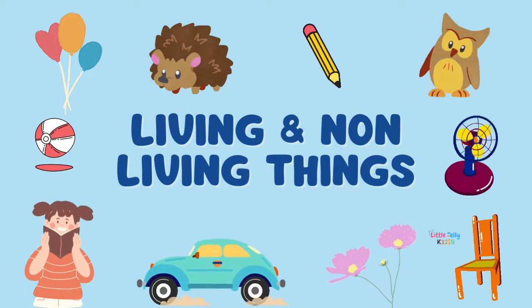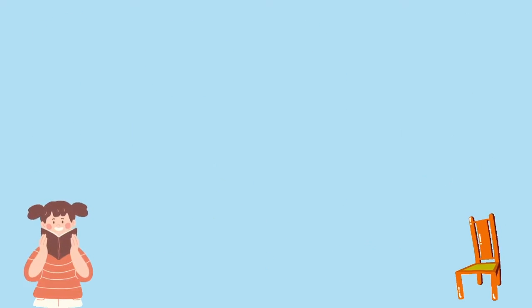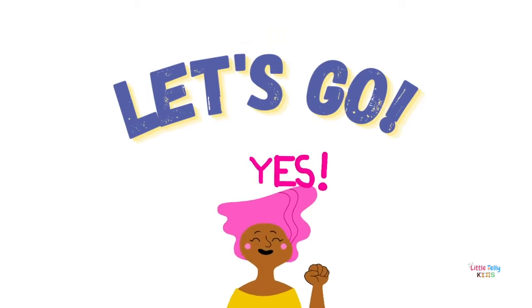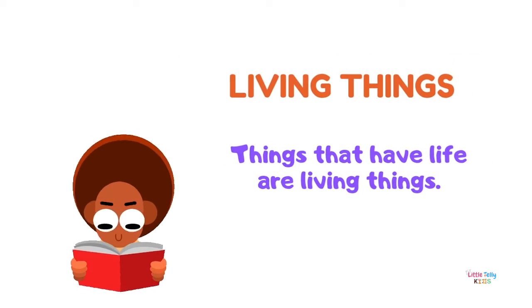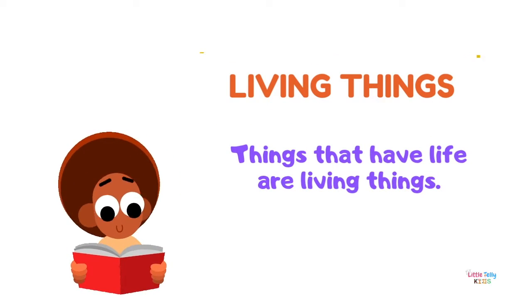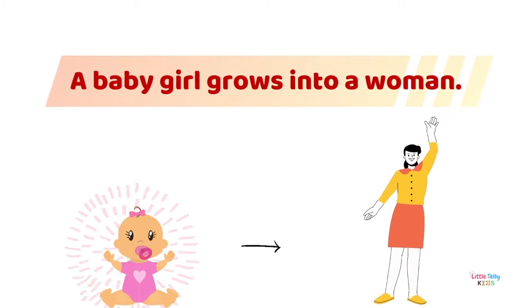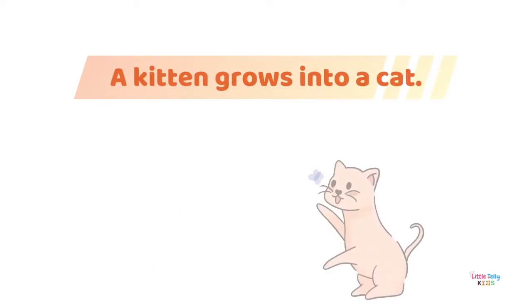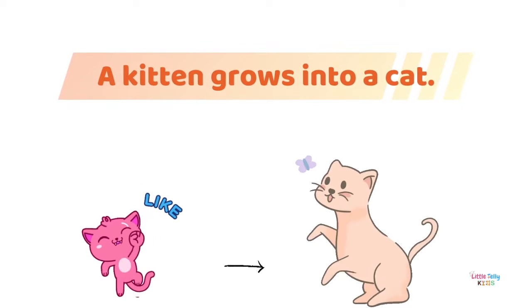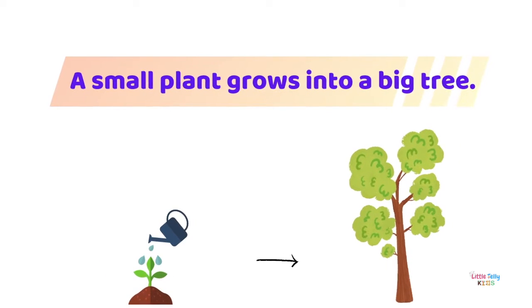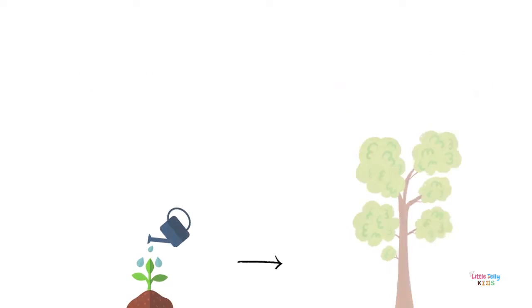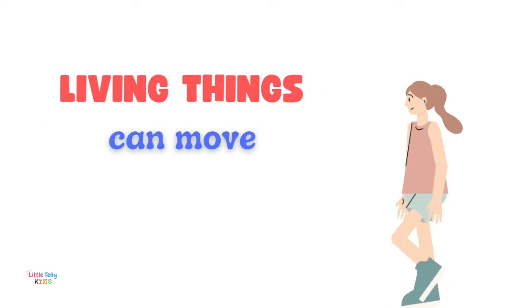Hey people, today we will learn about living and non-living things. Are you ready? Let's go! Living things are things that have life. Living things can grow — a baby girl grows into a woman, a kitten grows into a cat, a small plant grows into a big tree. Living things can move. Living things need food and water.